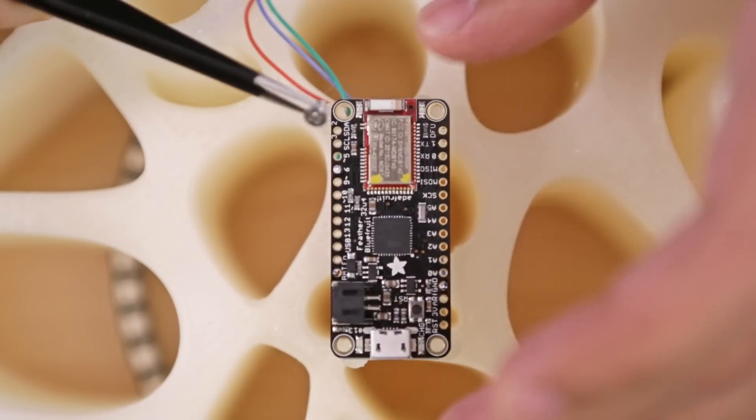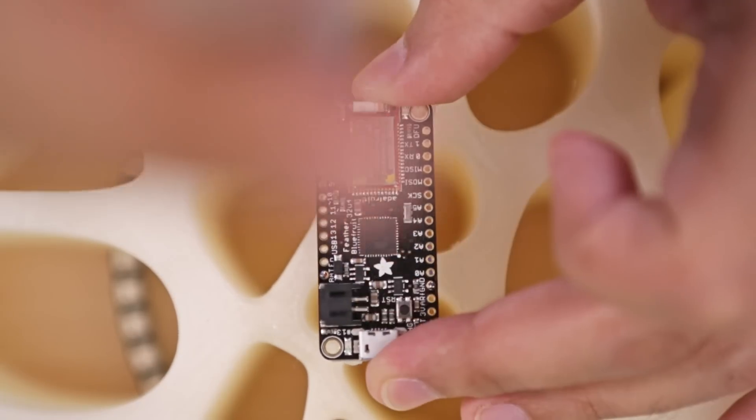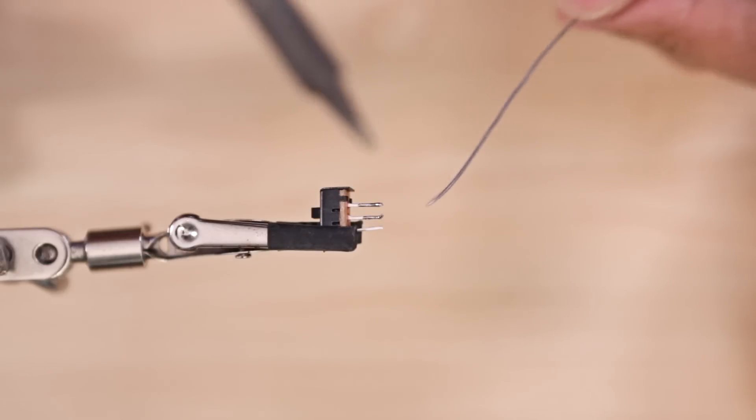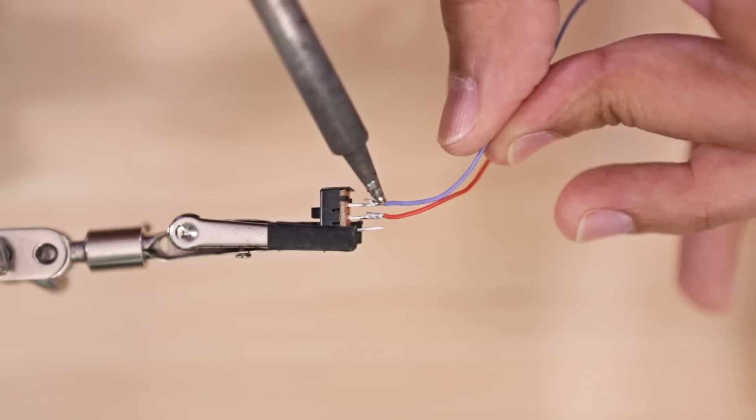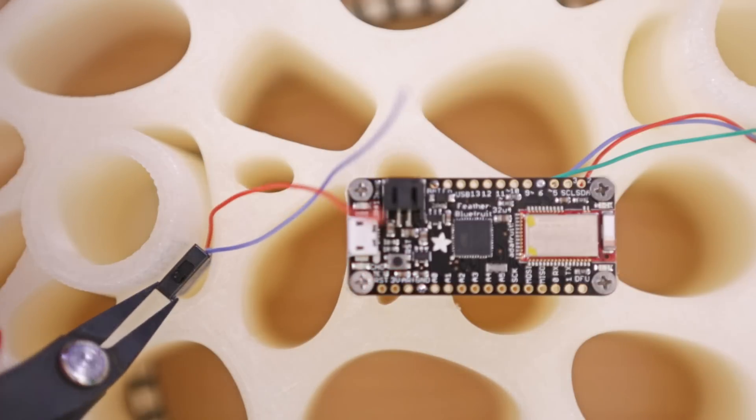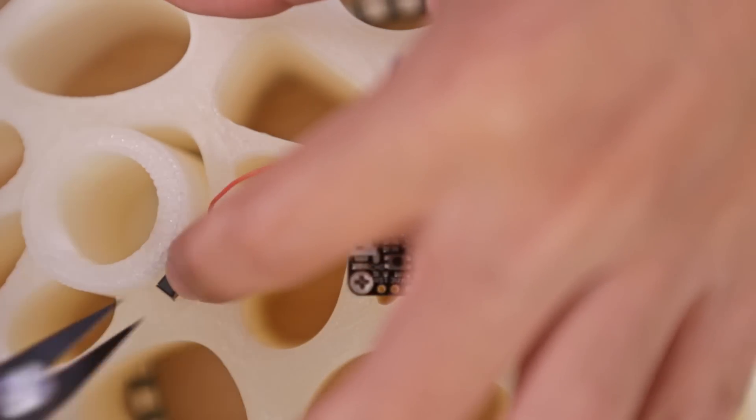We secured the Adafruit Feather to standoffs that are on the bottom of the seat using M25 machine screws. A slide switch will allow us to turn the circuit on and off. This can be wired to the enable and ground pins on the Adafruit Feather.